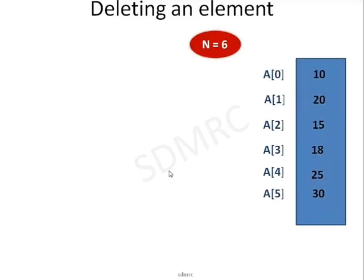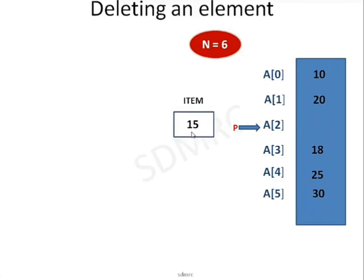Now let us see how to delete an element from the array. This is my array containing n = 6, so 6 elements. When you delete an element, you need to know only the location — from which position you are removing it. For example, I am removing the element at p = 2, so 15 will be removed. I will store it into a variable called item. Step number 1: item = a[p].